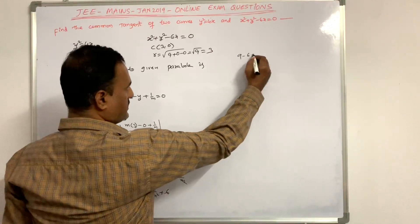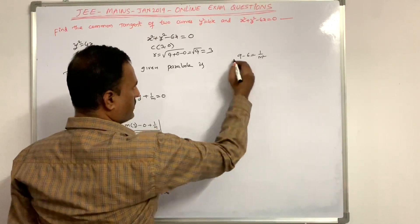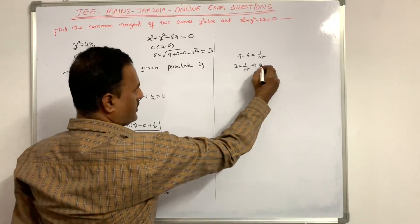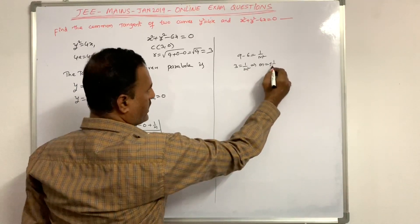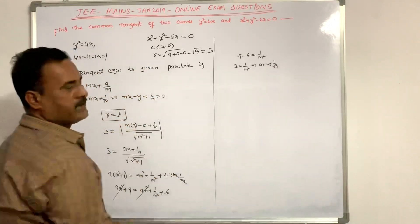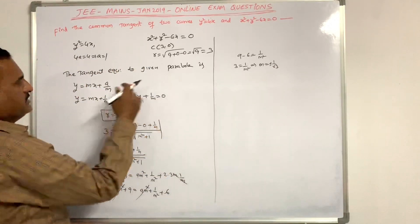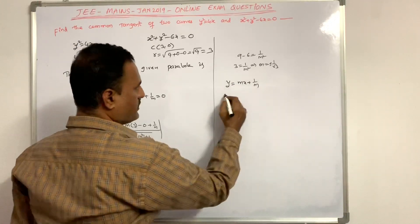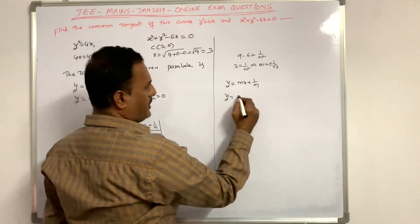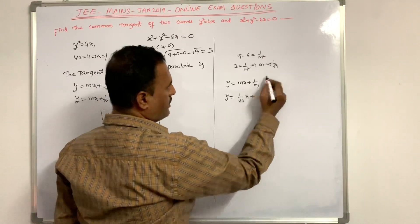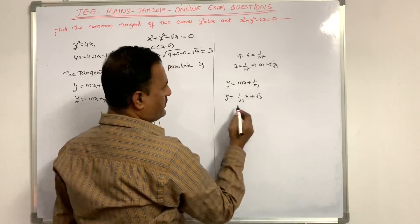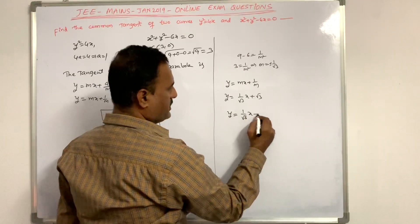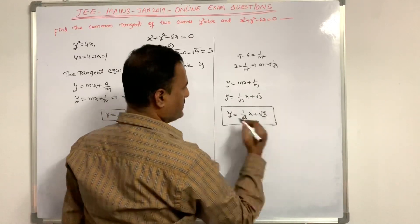9 - 6 = 1/m², so 3 = 1/m², giving m = ±1/√3. Substituting back into y = mx + 1/m: y = (1/√3)x + √3, which simplifies to y = (1/√3)(x + 3). These are the common tangent equations.